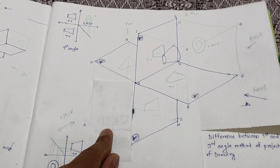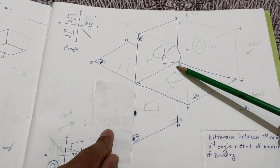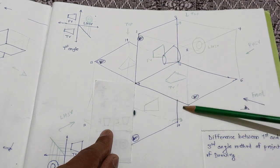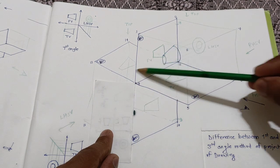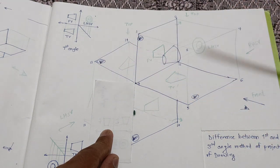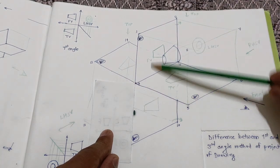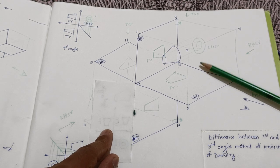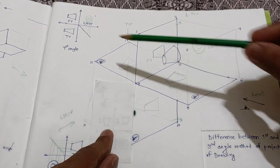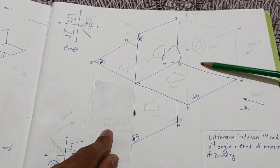Similarly, if I start observing the RHSV, the big circle and small circle will be projected on plane 1-4-5-8. This plane can be flipped to the left of the drawing and can be drawn to the left of the front view. So this is the technical fundamental behind why in the first angle method, LHSV is drawn at the right of the front view and RHSV at the left.